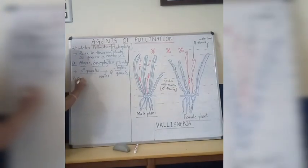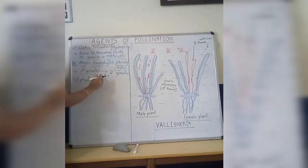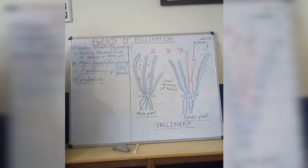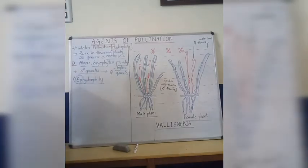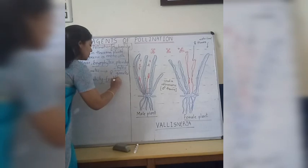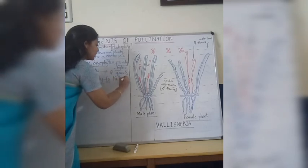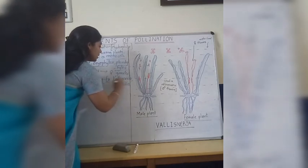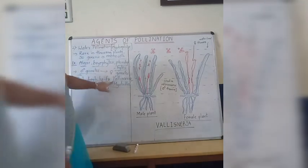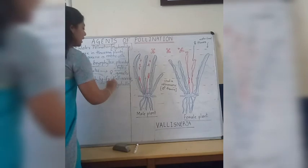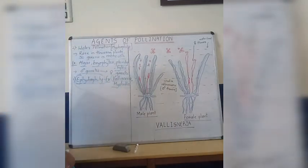Let us study the two different subtypes in water pollination. The first one is epihydrophily. 'Epi' refers to above, and 'hydrophily' refers to water pollination. We have two examples from the NCERT book: one is Vallisneria and another is Hydrilla. We are going to study epihydrophily in detail with the help of Vallisneria.